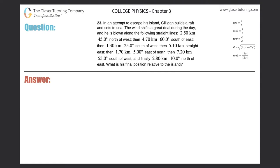Problem 23: In an attempt to escape his island, Gilligan builds a raft and sets to sea. The wind shifts a great deal during the day and he has been blown along the following straight lines: 2.5 km 45° north of west, 4.7 km 60° south of east, 1.3 km 25° southwest, 5.1 km straight east, 1.7 km 5° east of north, 7.2 km 55° southwest, and finally 2.8 km 10° north of east. What is his final position?